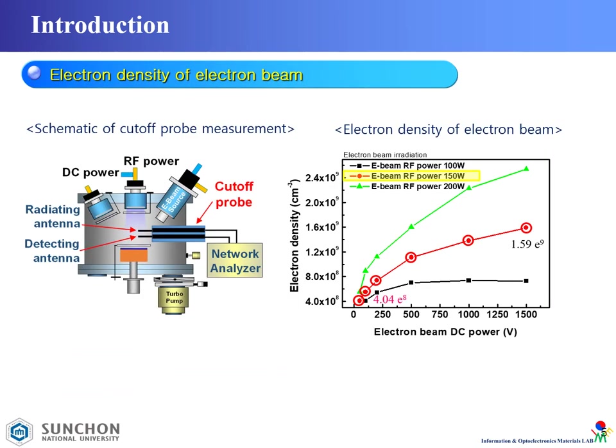This is a schematic of the electron beam annealing system with cut-off probe measurement for measuring electron density. We measure electron density as induced RF power with DC power. Today I will present the EB irradiation annealing method using RF power of 150W with DC power, and the electron density of the electron beam is shown here.